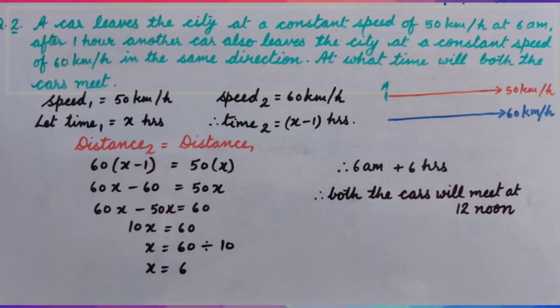A car leaves the city at a constant speed of 50 km per hour at 6 a.m. After one hour, another car also leaves the city at a constant speed of 60 km per hour in the same direction. At what time will both the cars meet?